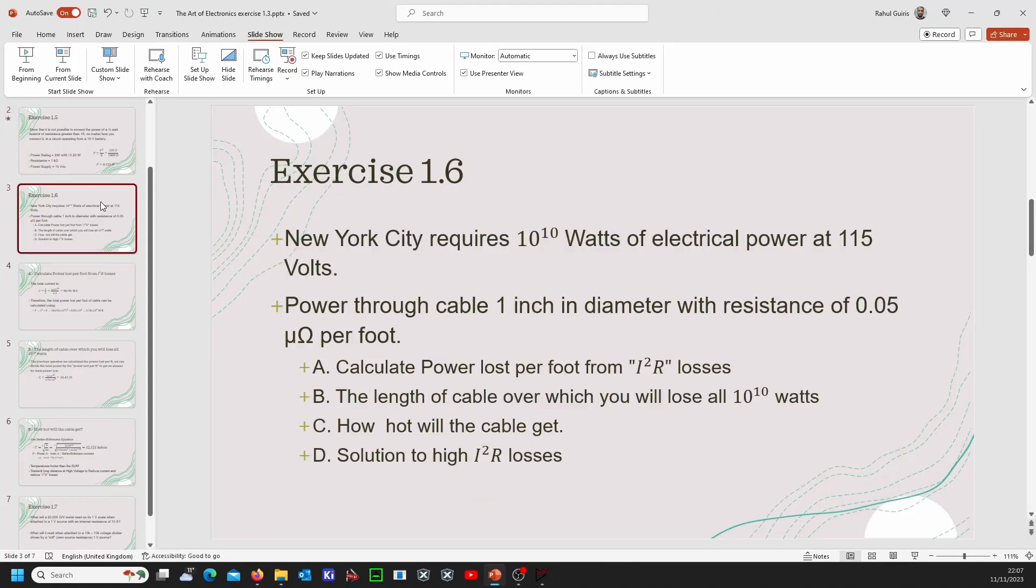Moving on to exercise 1.6. This exercise is a bit odd, not sure why it's here to be honest but it is optional. For this exercise we basically need to look at a power grid system for New York City. That's the description given in the book. New York City apparently requires 10 to the power of 10 watts of electrical power at 115 volts operating voltage. The question is divided into kind of four parts.